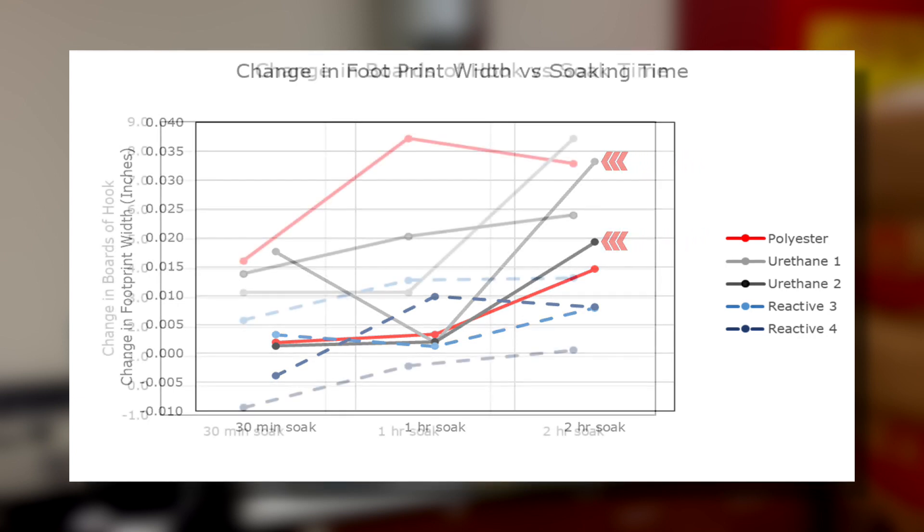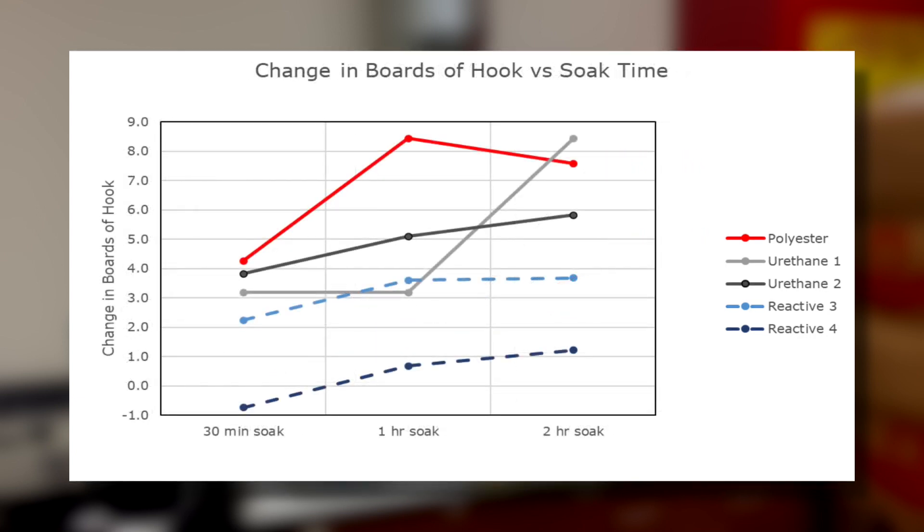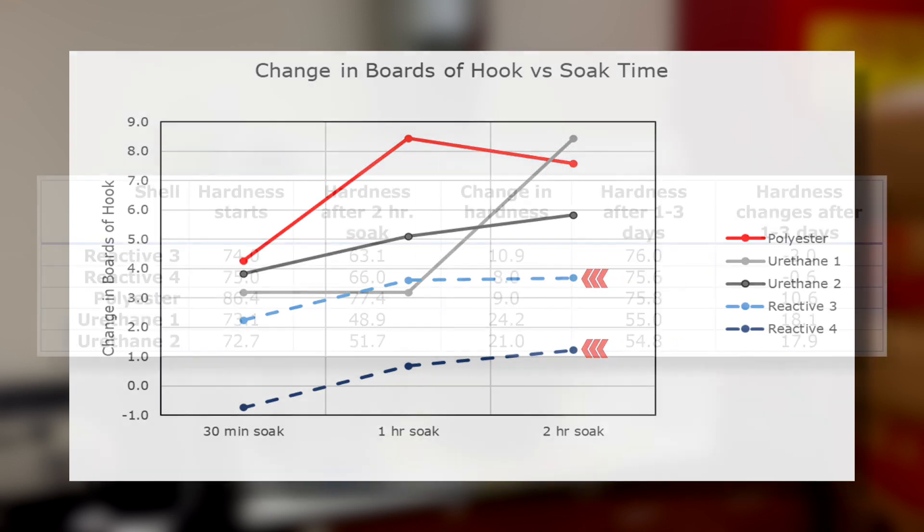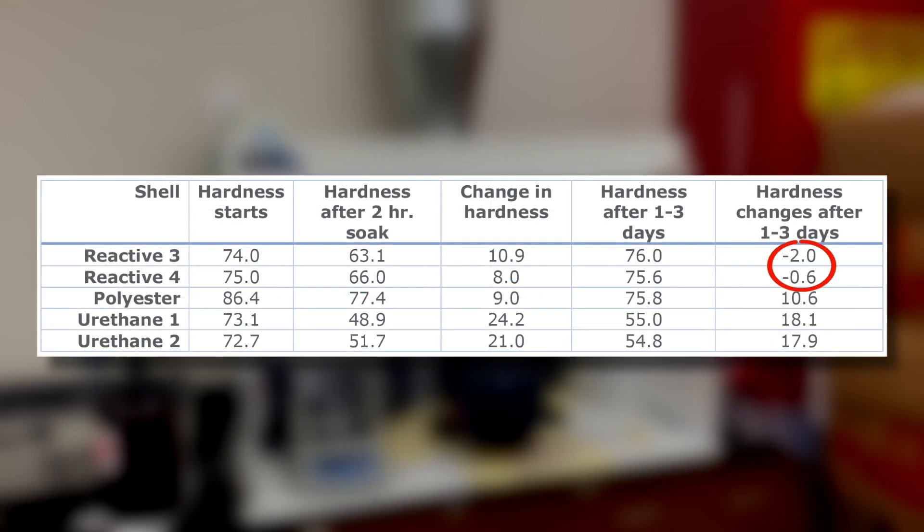One urethane ball sample also showed a greater increase in hook compared to polyester and reactive balls after soaking for two hours. Reactive balls were the least impacted, and they actually returned to their original hardness, or got harder, over time after soaking.